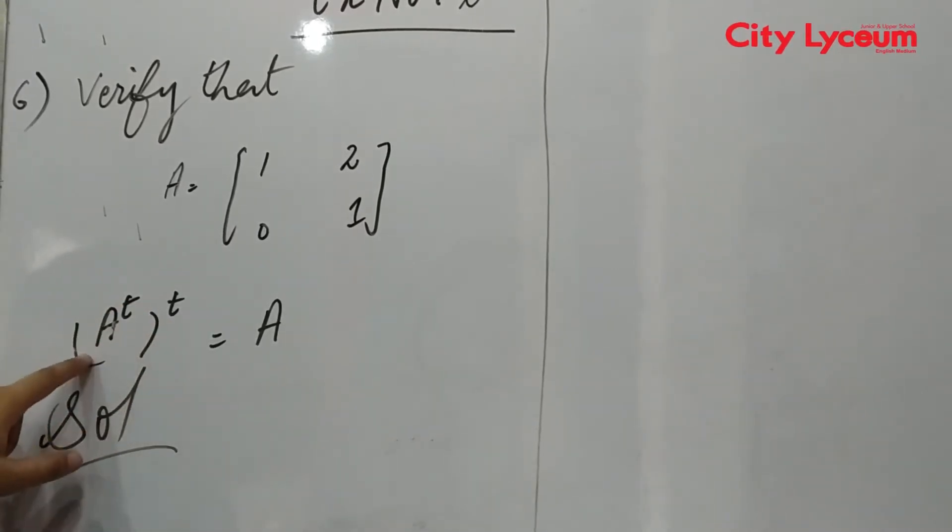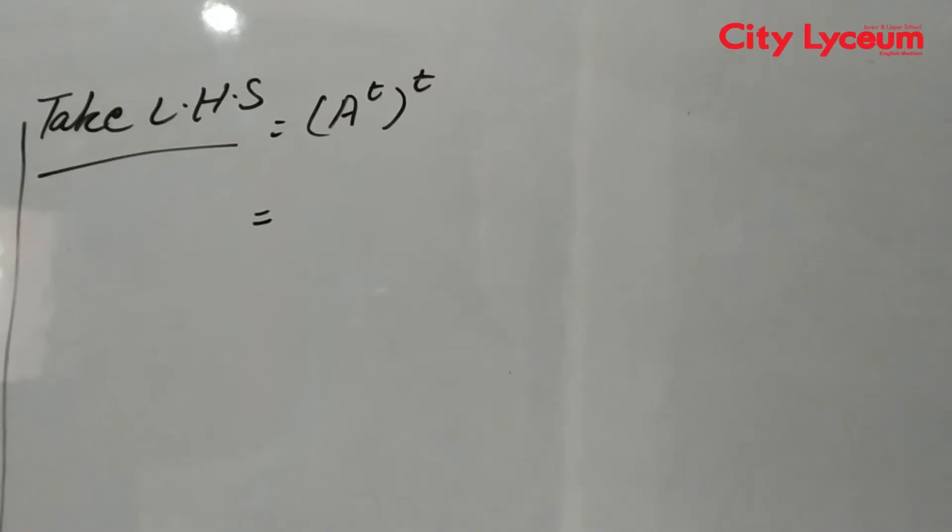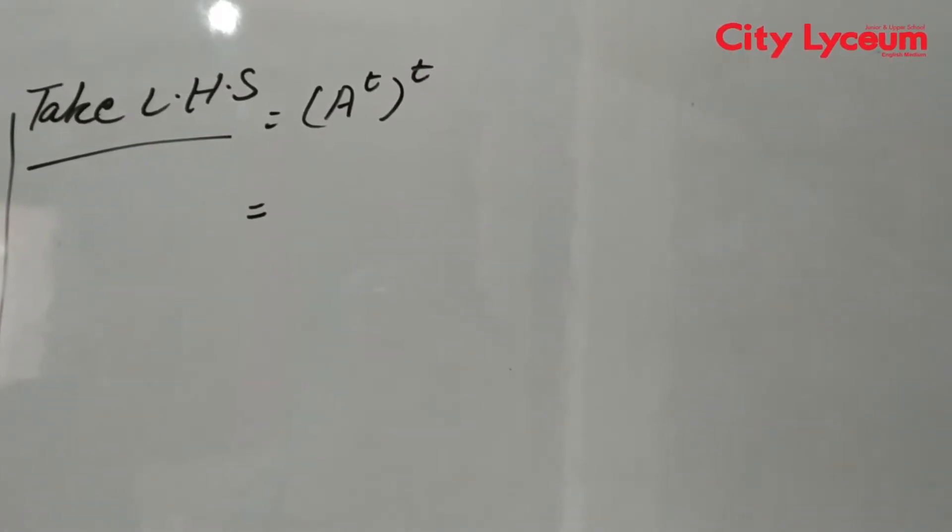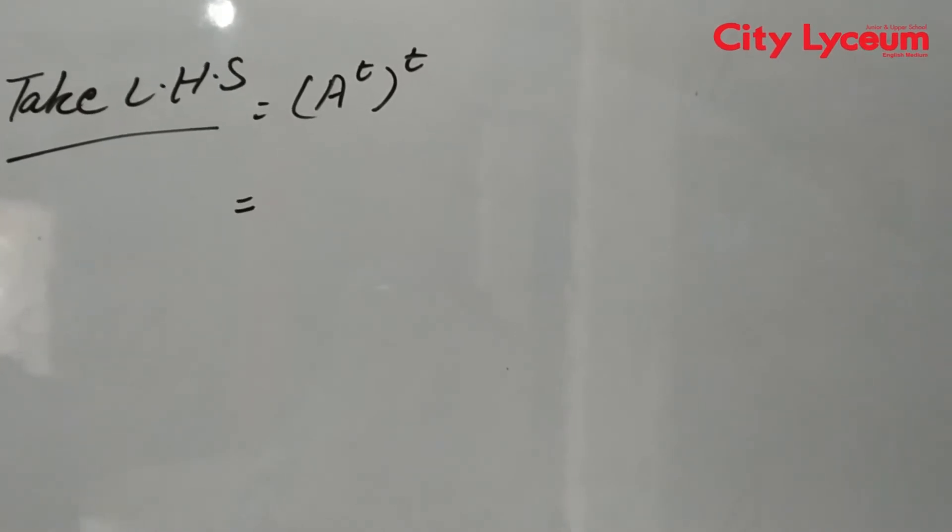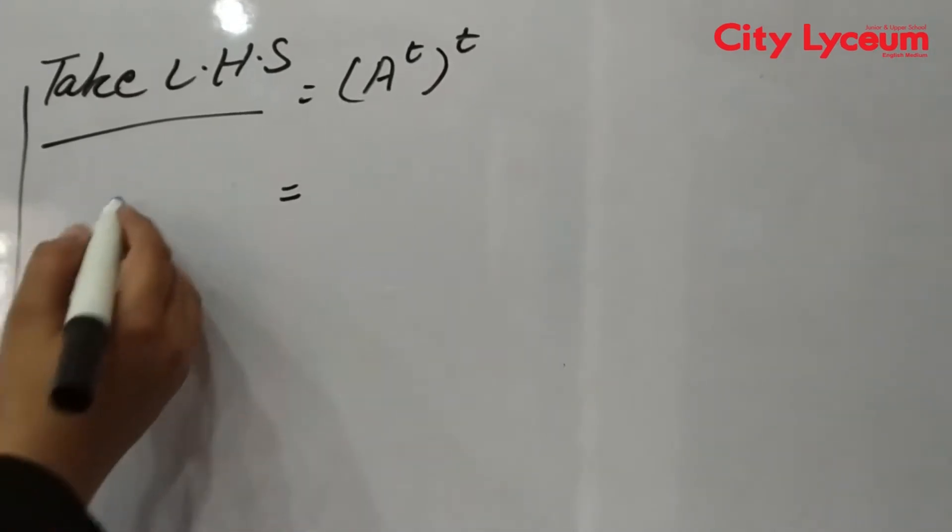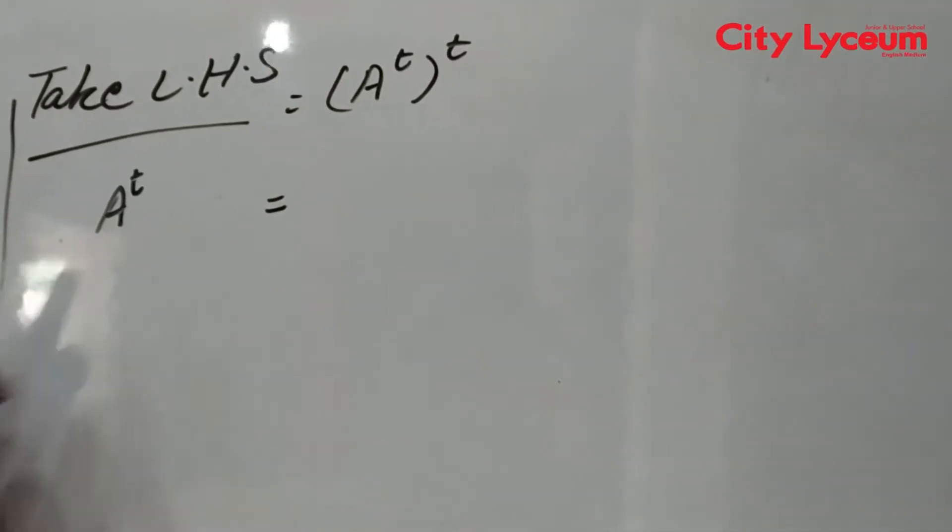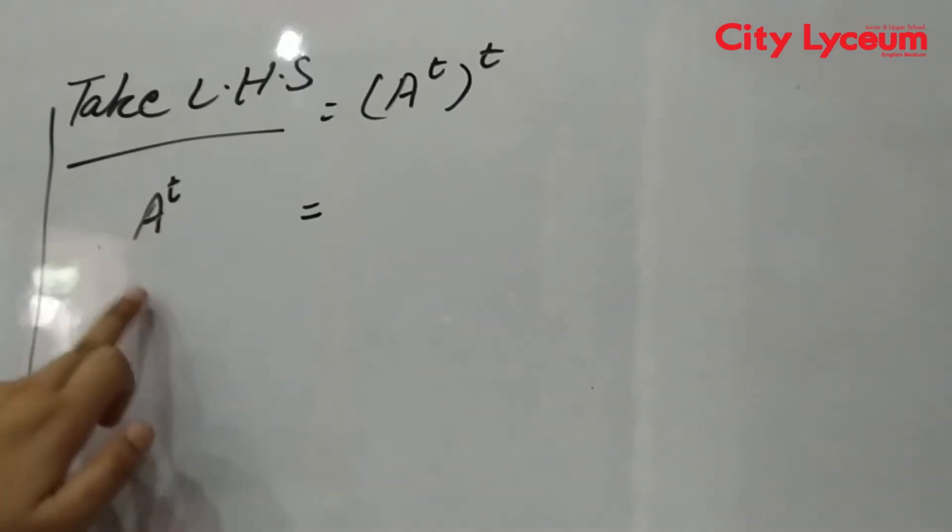So first we have to find A transpose and bracket transpose, and then we have to tell if this is equal or not. Let's take left hand side. In left hand side we have (A^t)^t. We have to define A transpose first.